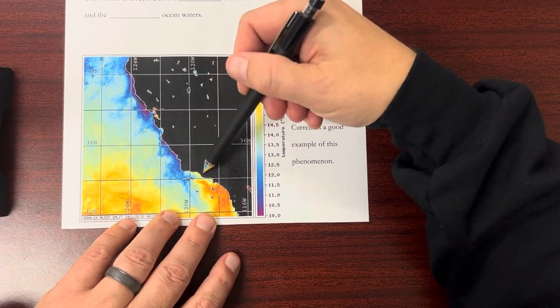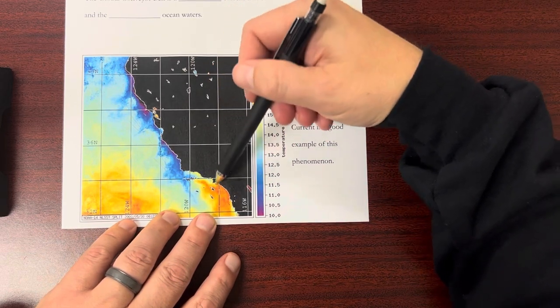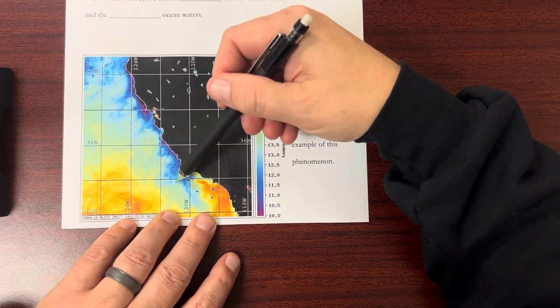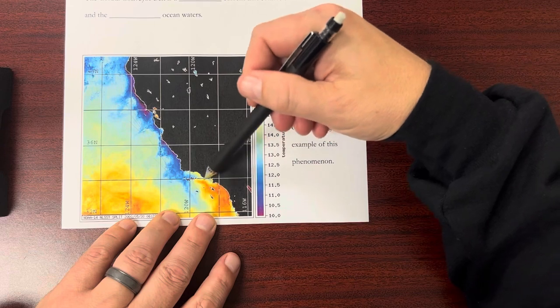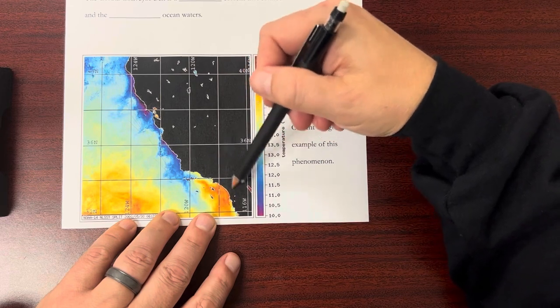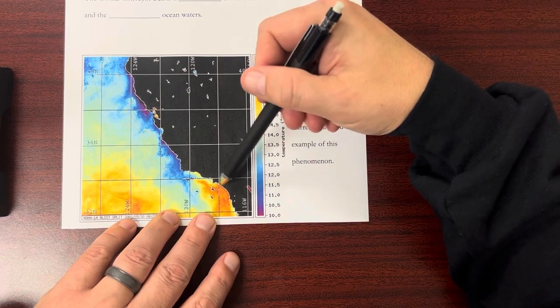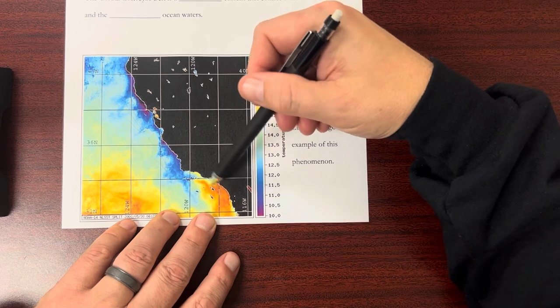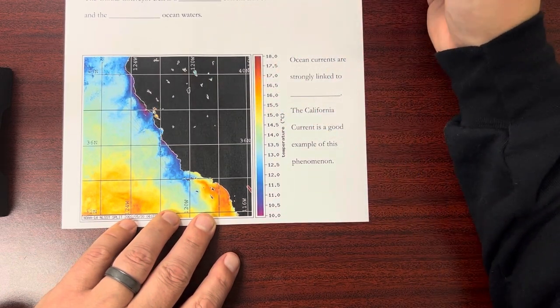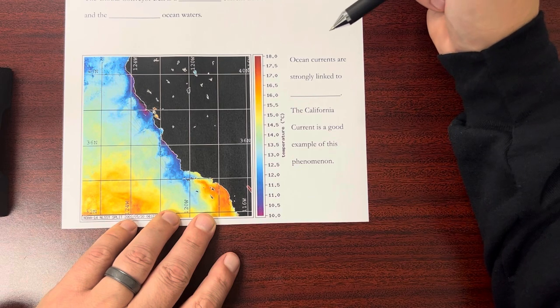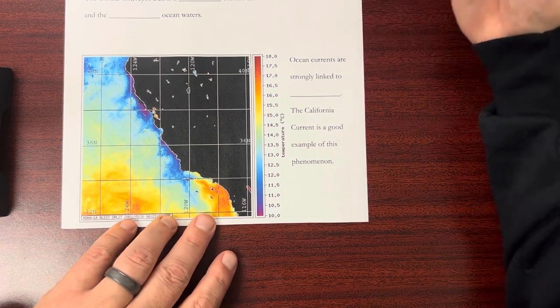But as you get further down into LA, San Diego and Mexico, that current loses a lot of its strength and it kind of swirls in here and warms up. So they have a different climate. They have warmer temperatures based on this water that heats up more than the water off the northern California coast. So the California current is a good example of this phenomenon.